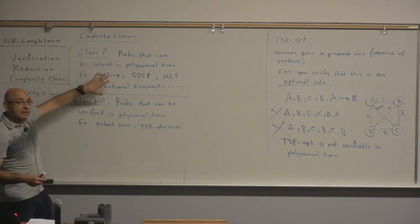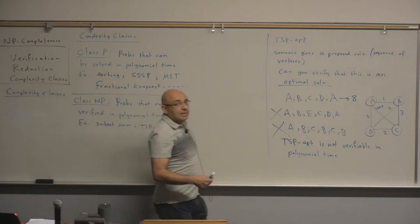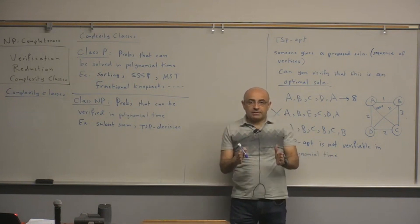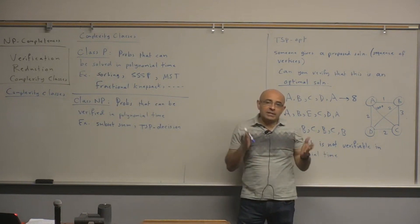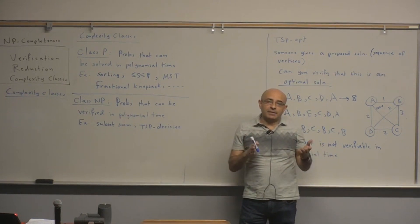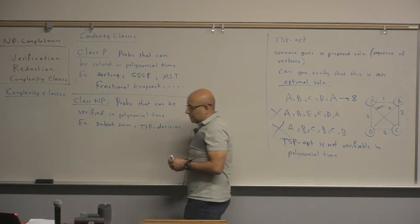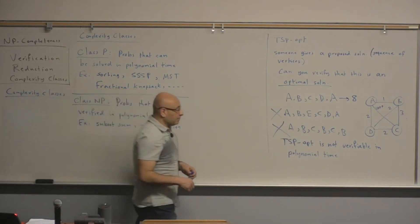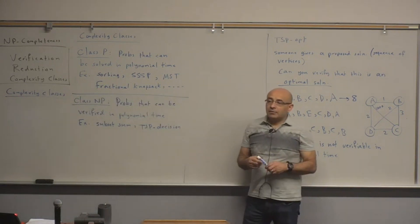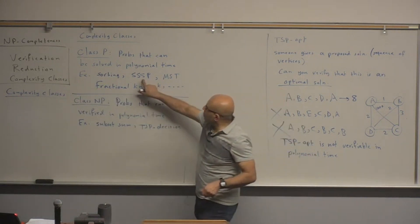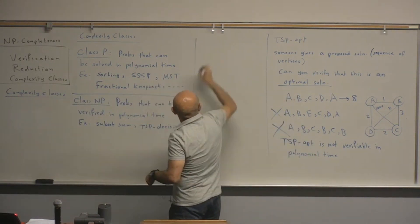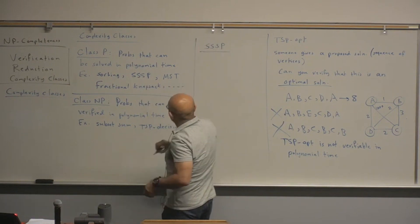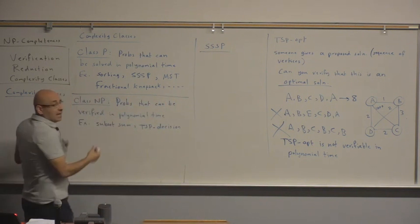If a problem can be solved in polynomial time, then you can do the harder thing, which is actually solving it. Then if you can solve it, you can easily verify it in polynomial time. For example, verifying the single source shortest path problem that we solved using Dijkstra's algorithm.